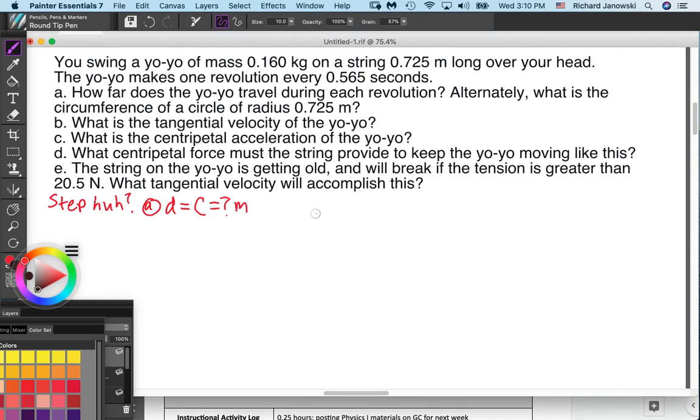So think about what's happening. Let me try to draw a circle here. I'm getting better at this thing, but when I try to draw and the computer doesn't keep up, it makes it almost impossible. Okay, pretend that's a circle. So this is the overhead view. Your hand's going to be here, the string goes out to here. So here's your yo-yo. When this thing goes around, the total distance it goes every time is the circumference of the circle. So what is the circumference of a circle?